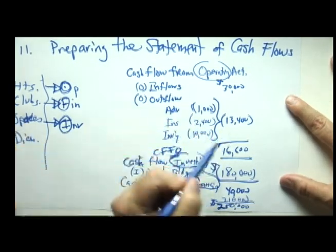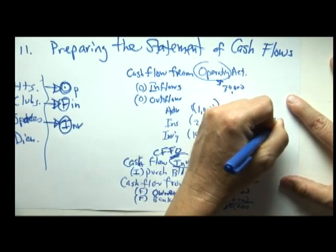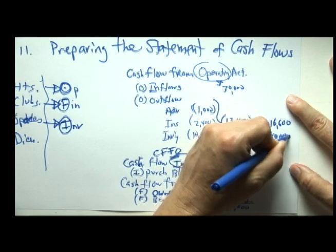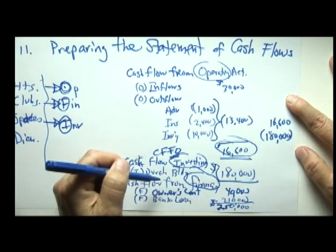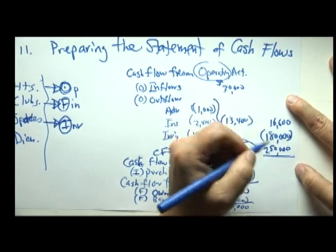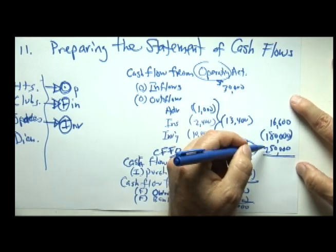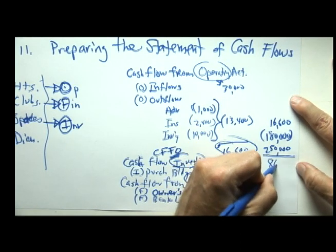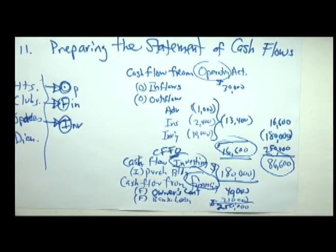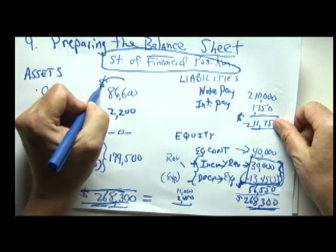So if you add your three subtotals, operating cash is $16,600 inflow. Our outflows were $180,000 from buying the building, but we received $250,000 from the owner and from the bank. So our change in cash was $70,000 plus $16,600, it should be $86,600. So we can compare that. Is that our ending balance on our balance sheet? Well, let's go back to our balance sheet and see if, in fact, we had $86,600 at the end of the period. There it is.